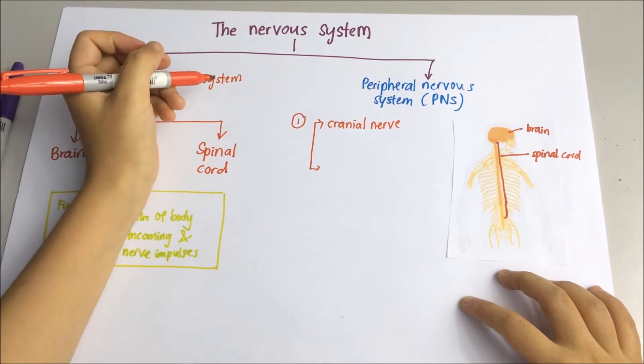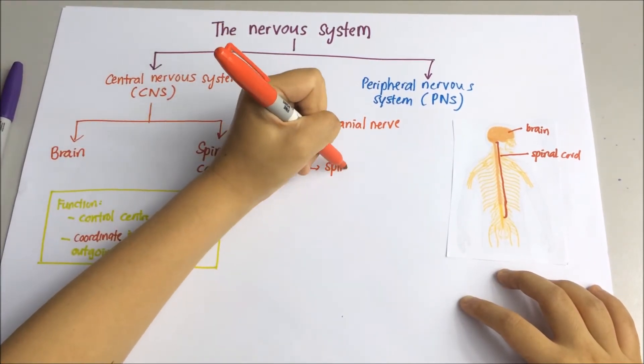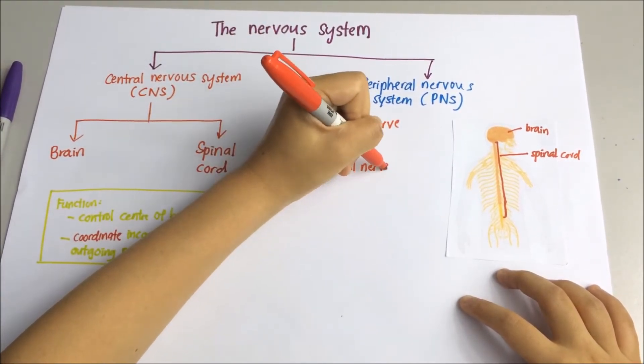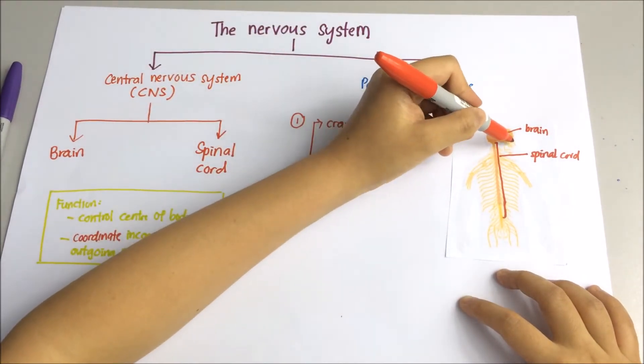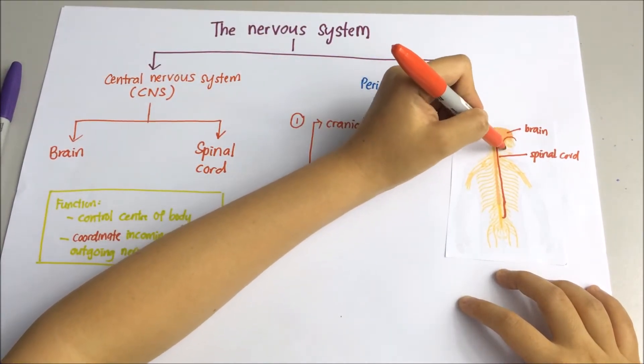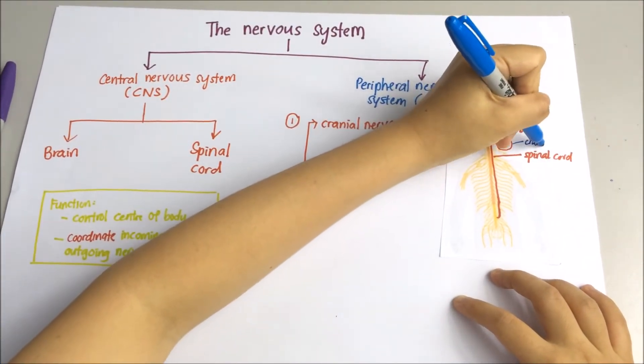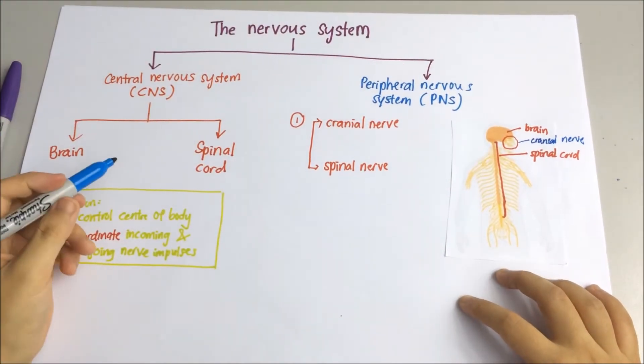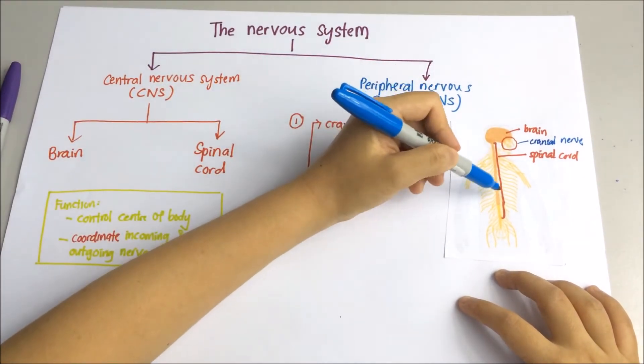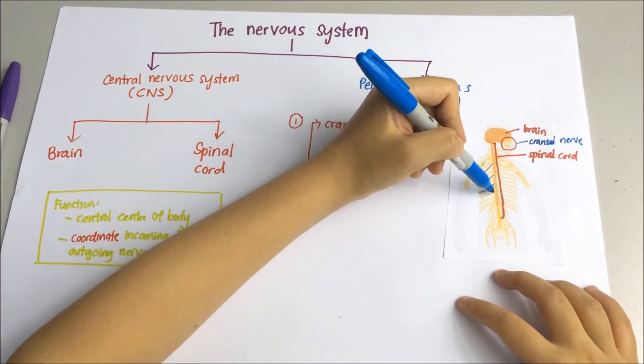First, cranial nerve and also spinal nerves. Cranial nerves are nerves that arise from the brain. Spinal nerves are nerves that arise from the spinal cord.